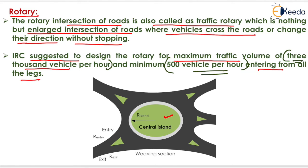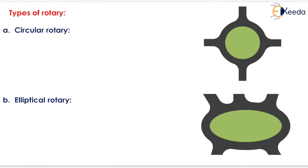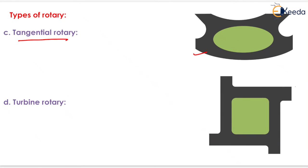A rotary is shown with different roads connecting at it. The key dimensions include: the radius of the island, the radius at entry, and the radius at exit. Islands are provided to reduce the chances of accidents. The types of rotaries include circular, elliptical, tangential, and turbine rotary.